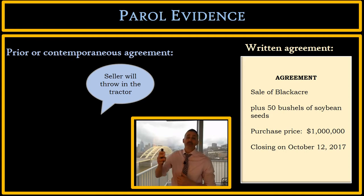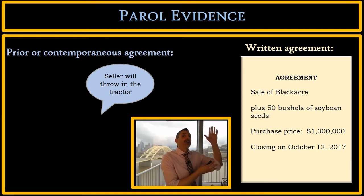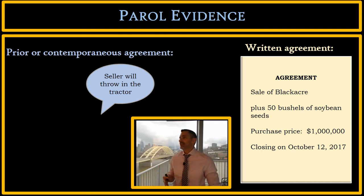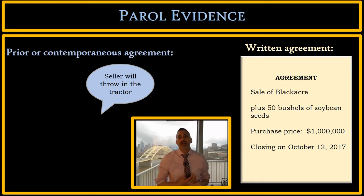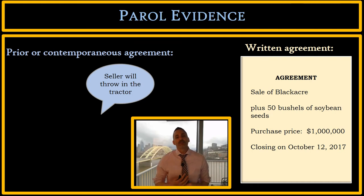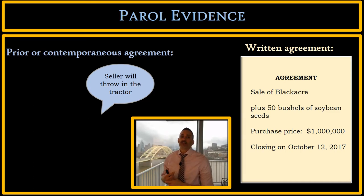Our final prior agreement is that the seller will throw in the tractor. Is there anything about a tractor in the written agreement? No, there's nothing about a tractor or vehicles in the written agreement. So we apply our plausibility standard: how plausible is it that the parties agreed that the seller would throw in the tractor and then didn't put it in the written agreement? If it's very implausible, the Parole Evidence Rule will exclude the evidence. If it is very plausible, the Parole Evidence Rule will admit the evidence and let the jury hear it.